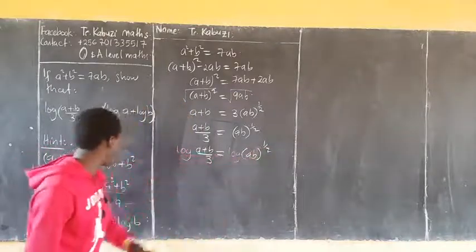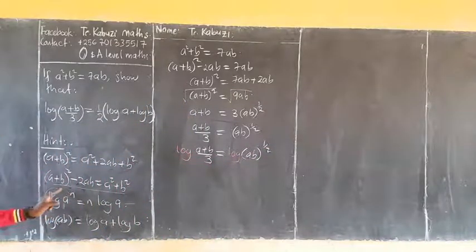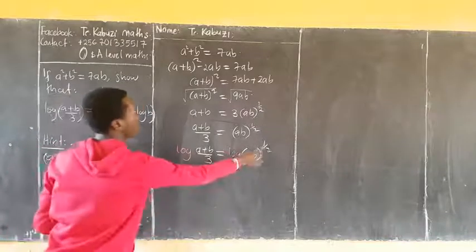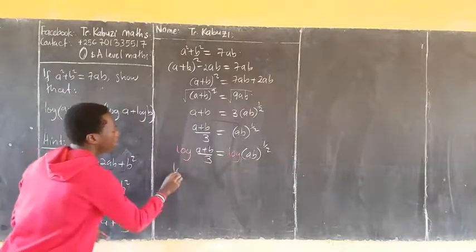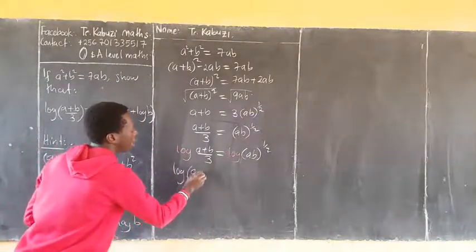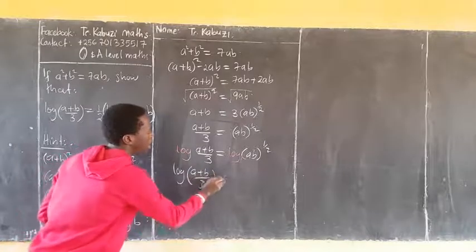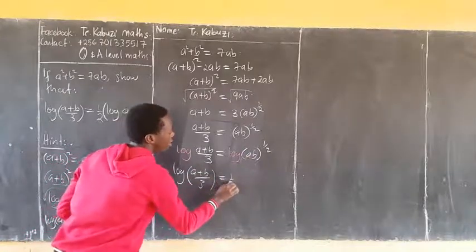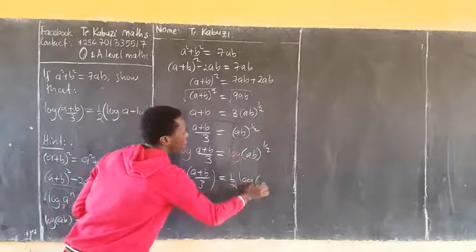Now using this property that this power can lower, I am going to lower it here. So we have now log((a+b)/3) equaling (1/2) times log(AB).